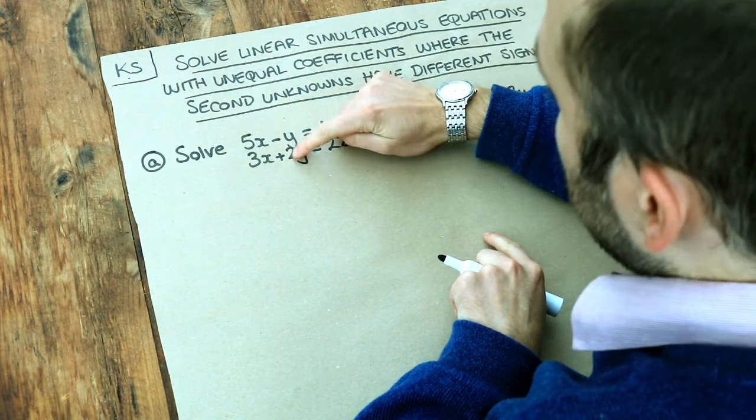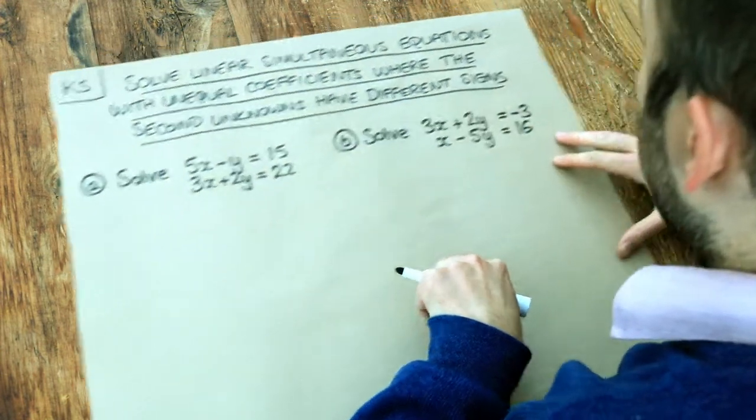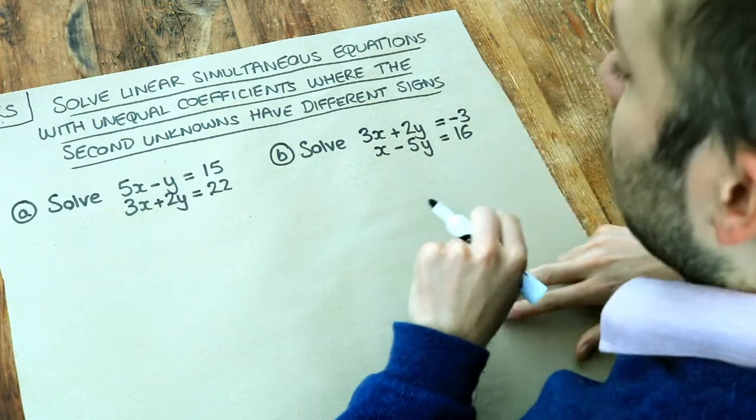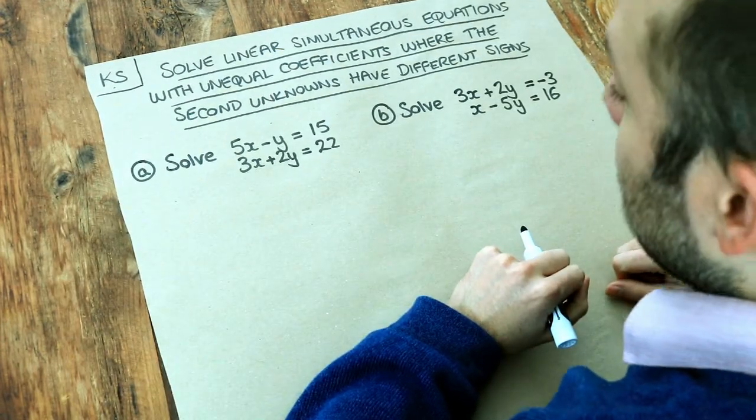So this is minus 1 but this is plus 2, and 1 and 2 are different numbers. Here again different signs, plus and minus, and the 2 and the 5 are different numbers. So let's think what we did in the previous videos.